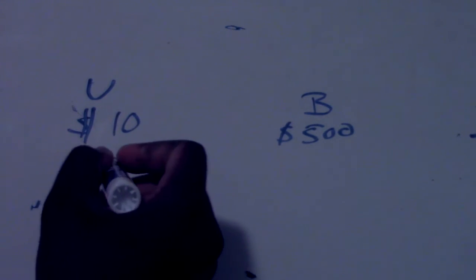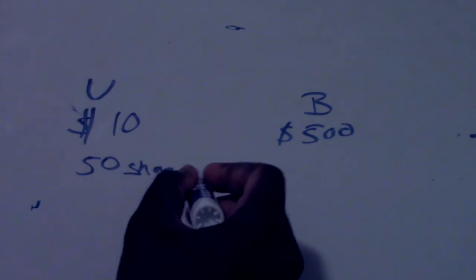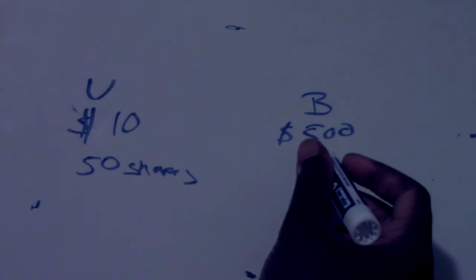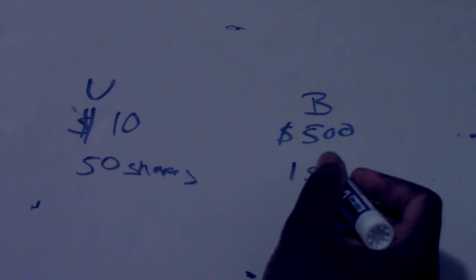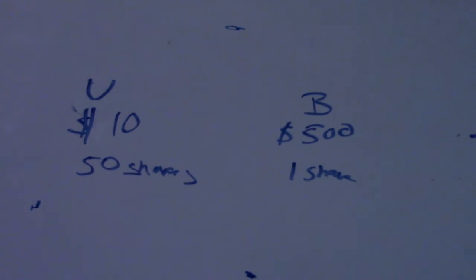So let's say I have five hundred dollars. If I have five hundred dollars, I would get fifty shares of U, right? Fifty shares. And if I have five hundred dollars invested in B stock, I would get one share of B stock. Fifty shares of one, pretty simple.